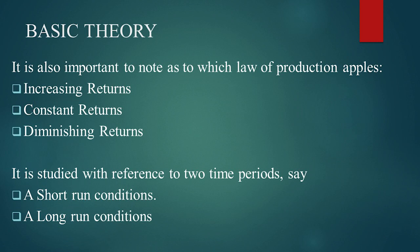It is very important to note which law of production applies. Basically there are three laws of production: the law of increasing returns, law of constant returns, and law of diminishing returns. These laws are to be studied with reference to two time spans: short run conditions and long run conditions. Initially the increasing returns start happening, then constant returns happen for a very short period of time, and beyond that the diminishing returns apply.